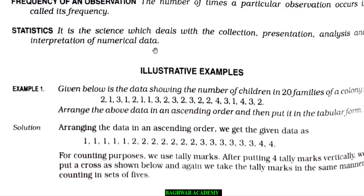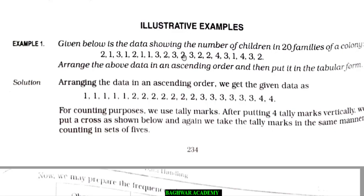Some illustrative examples have been given. You need to go through and understand them. Given below is the data showing the number of children in 20 families of a colony. Arrange the above data in ascending order and then put it in tabular form. So it is easy — you know how to arrange in ascending and descending order. Here you see the smallest number is 1 — so 1 has been arranged, and it appears 1, 2, 3, 4, 5 times. Then the second number is 2, then 3, then 4. Now when putting it in tabulation form, we write: observation, then tally marks, and then number of families.